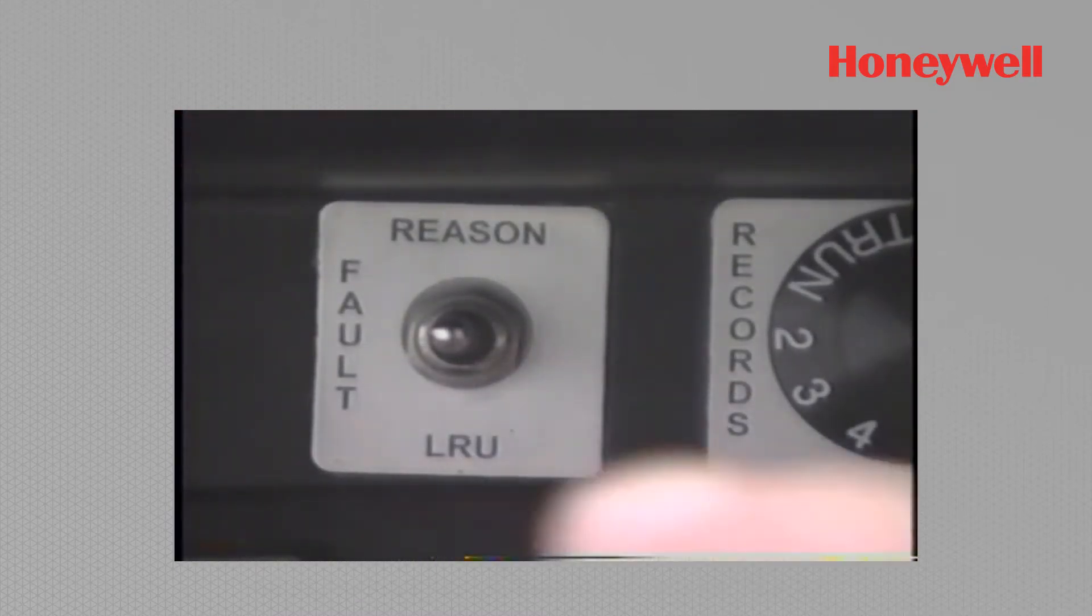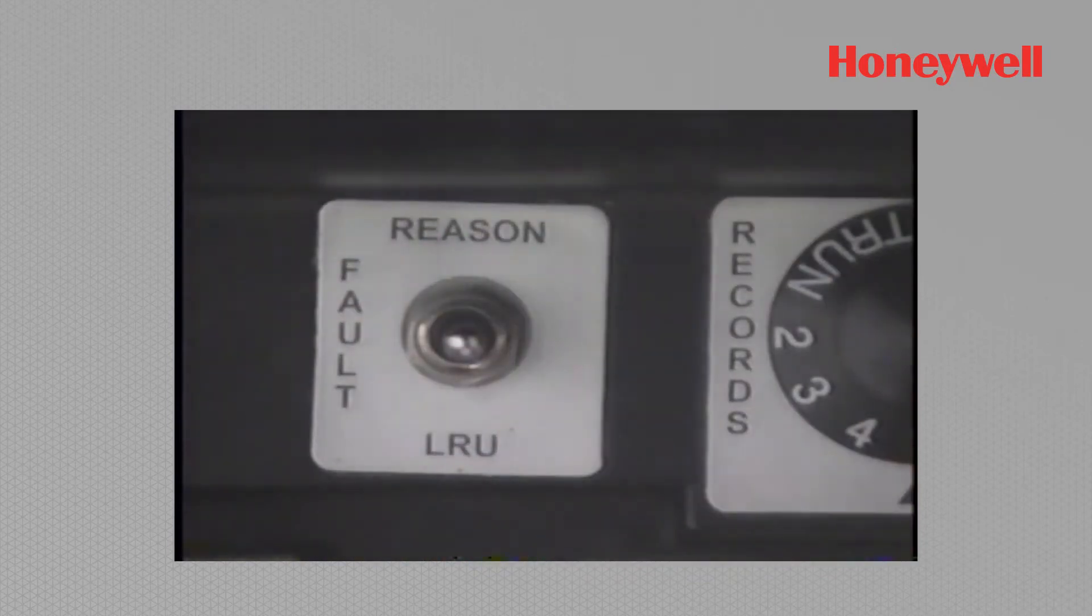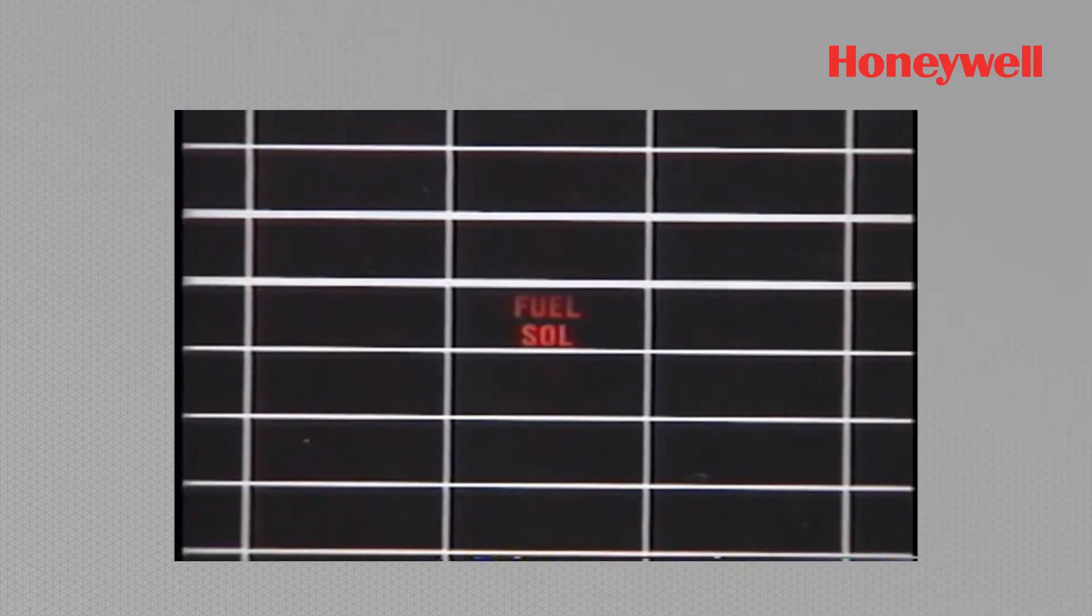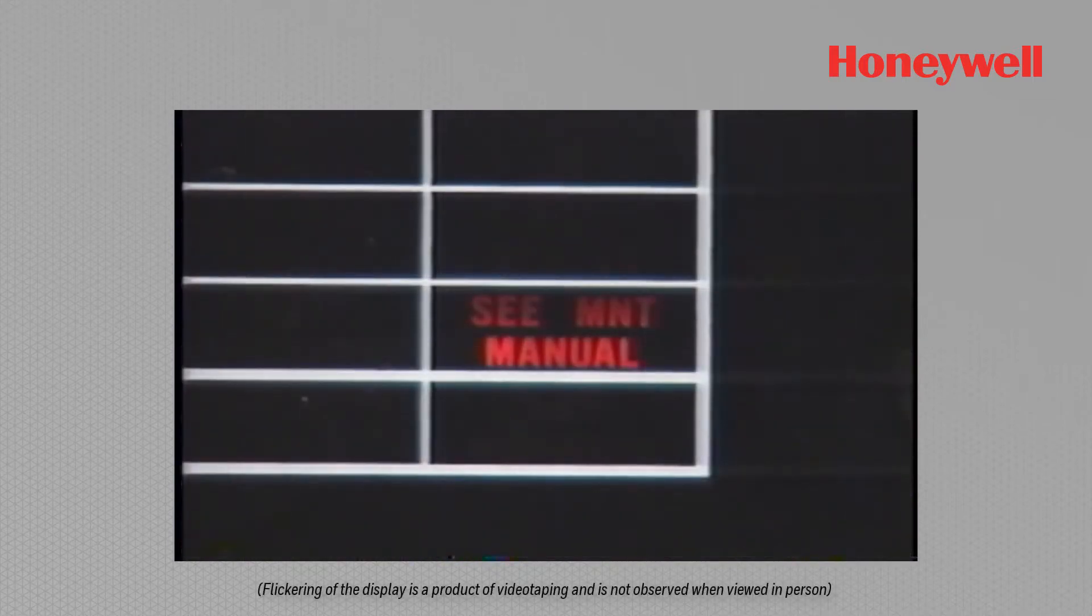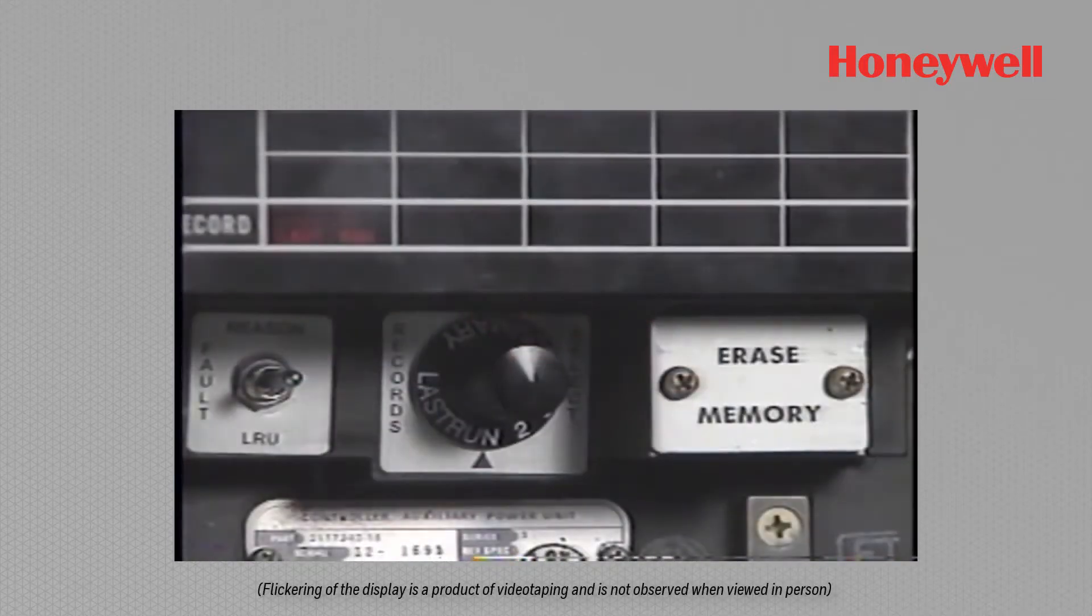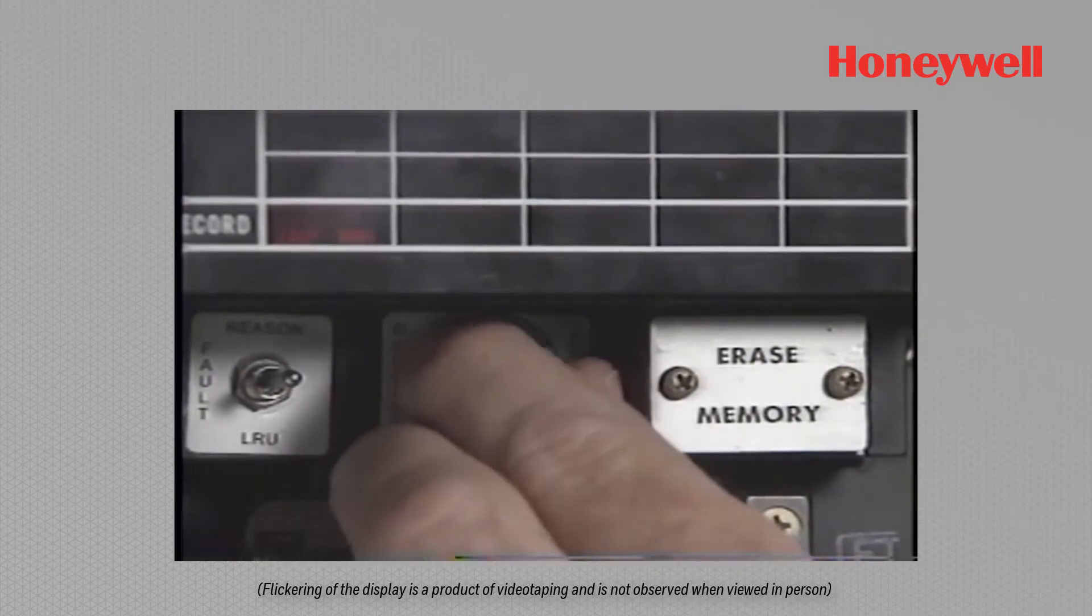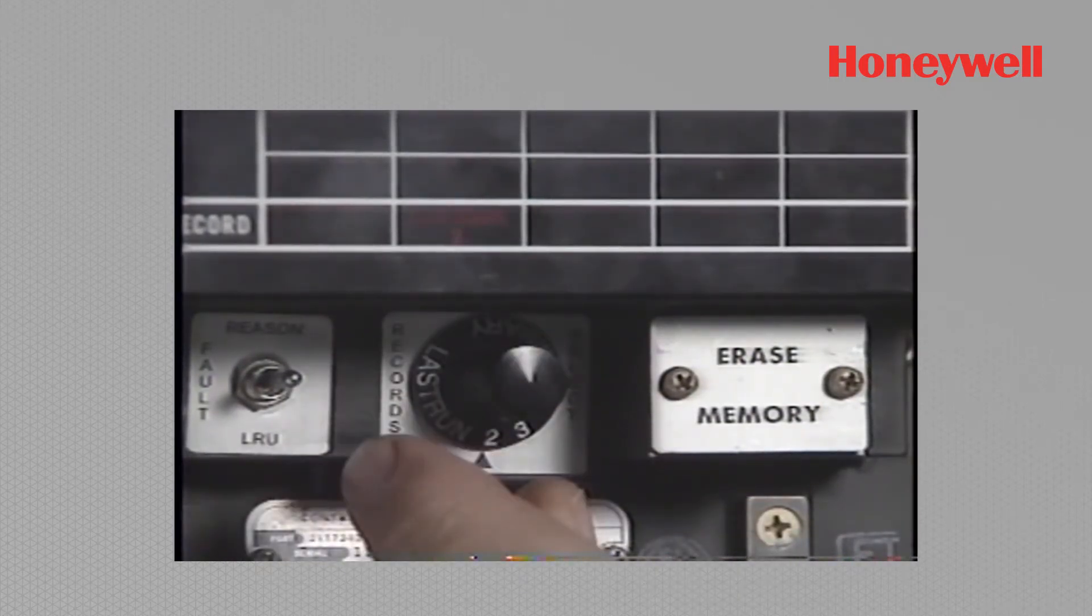The fault toggle switch in the LRU position will simultaneously display for 6 seconds all the faulty LRUs that have been associated with that shutdown. If no associated LRUs have occurred, see maintenance manual will be displayed for 6 seconds. Rotating the record select switch at any time will deactivate the current display.